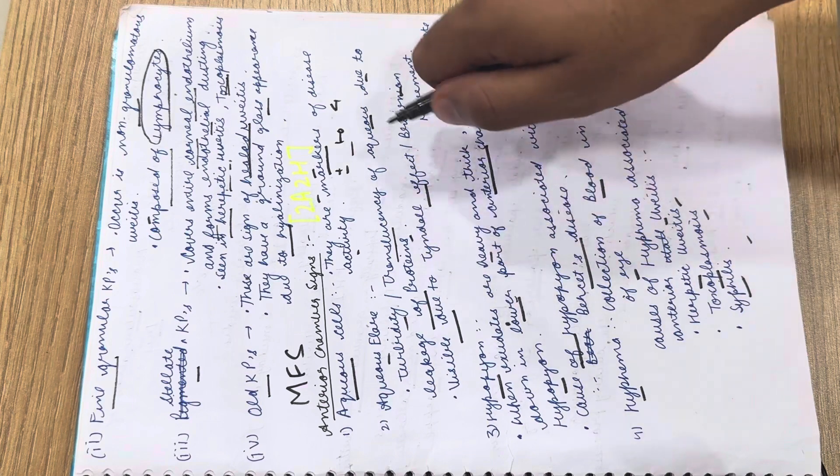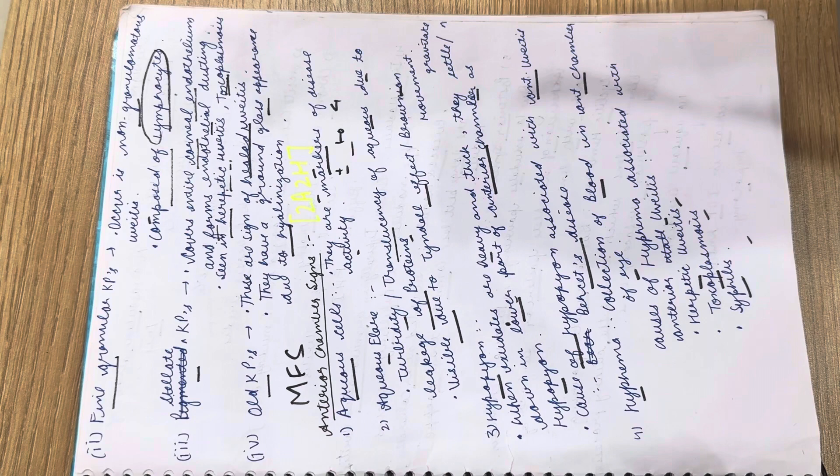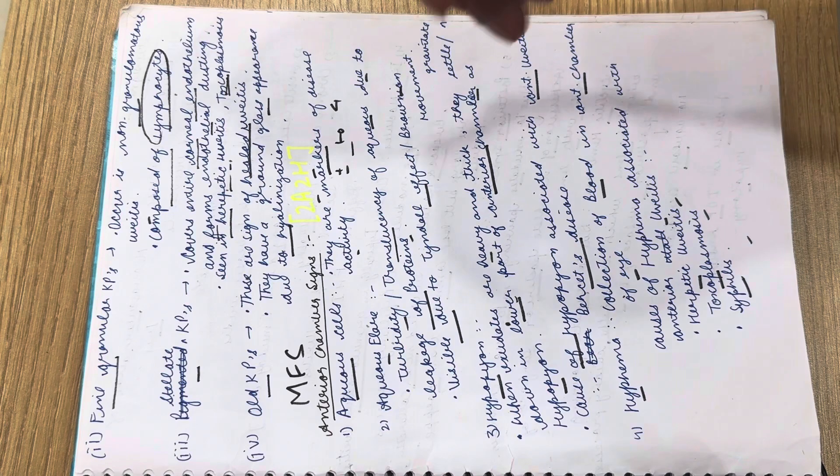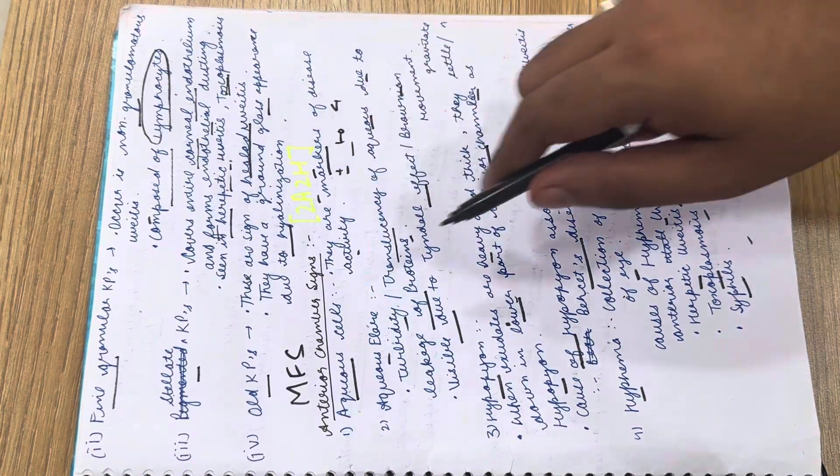What is Tyndall effect? In a dark room, if you pass a torch light, you can see fine particles suspended in the air—this is known as Tyndall effect. Due to this effect, we can see aqueous flare in the anterior chamber.